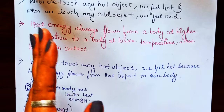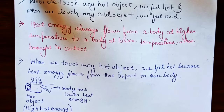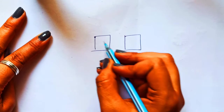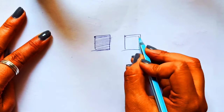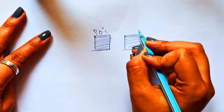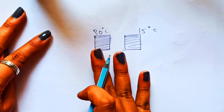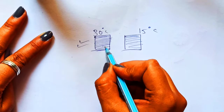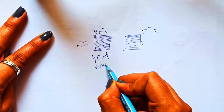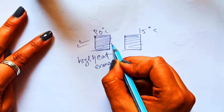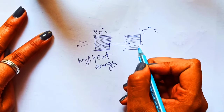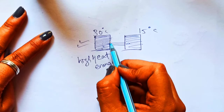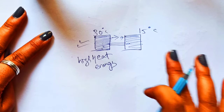For example, if we have two bodies — one at 30 degrees and one at 15 degrees — the one at 30 degrees is warmer and has more heat energy. When these two bodies are brought in contact, heat energy flows from the 30-degree body to the 15-degree body.